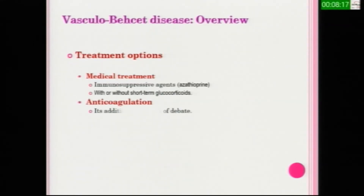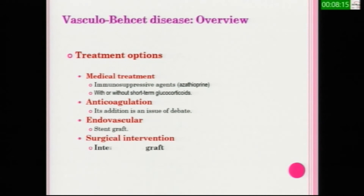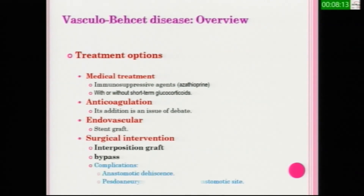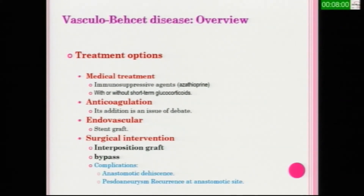There are many treatment options. Immunosuppressive therapy with or without glucocorticoid addition is the main stage of treatment of vascular Behçet's disease. In case of venous thrombosis or intracardiac thrombosis, anticoagulation addition may be beneficial; otherwise, anticoagulation in vascular Behçet's disease is still an issue of debate. Endovascular treatment may be beneficial and may prevent complications of surgical intervention, like anastomotic dehiscence or pseudoaneurysm recurrence at the anastomotic site.